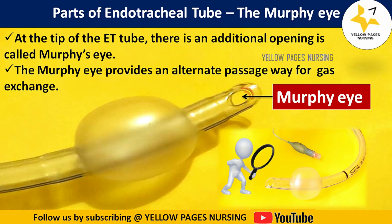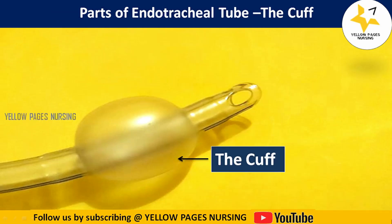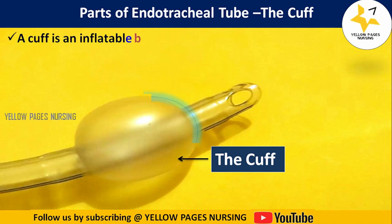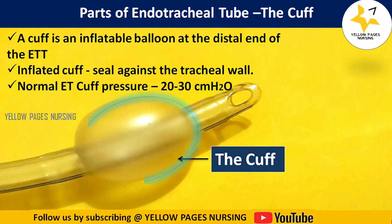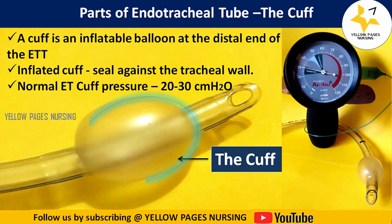Next comes the cuff — a cuff is an inflatable balloon at the distal end of the endotracheal tube. The inflated cuff produces a seal against the tracheal wall, which prevents gastric contents from entering the trachea and promotes positive pressure ventilation. The normal endotracheal cuff pressure varies between 20 to 30 centimeters of water.